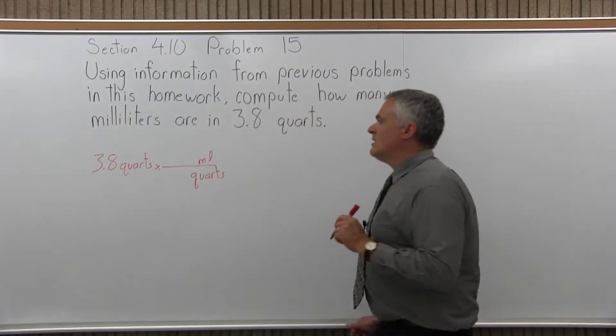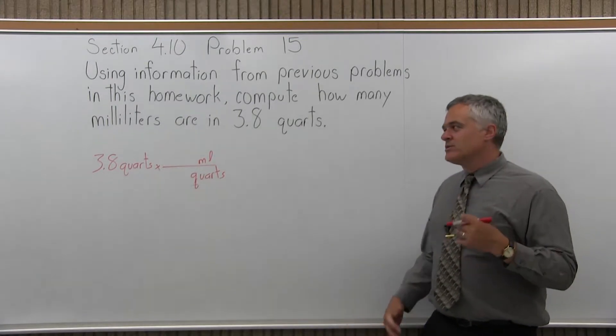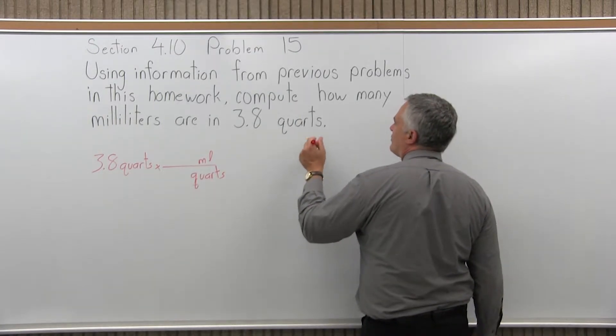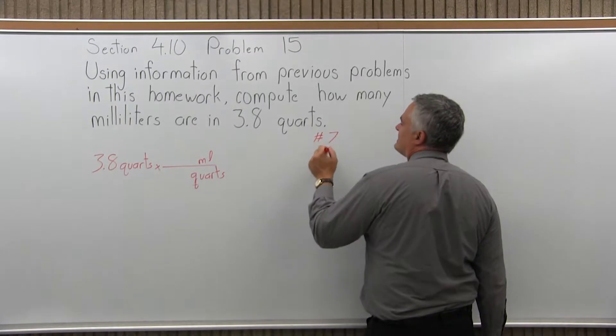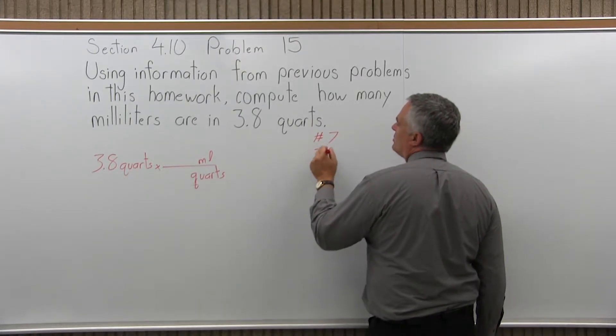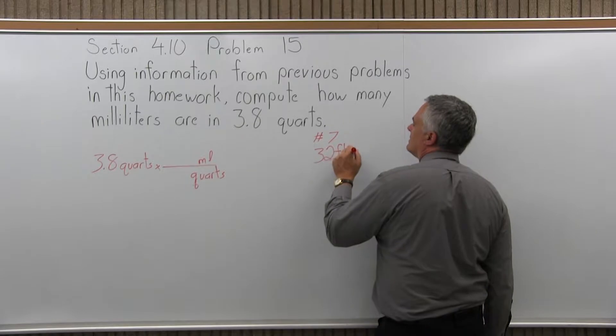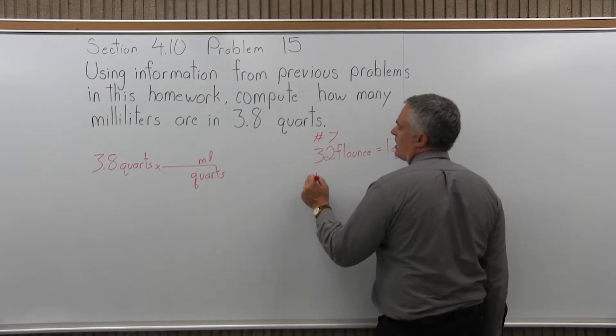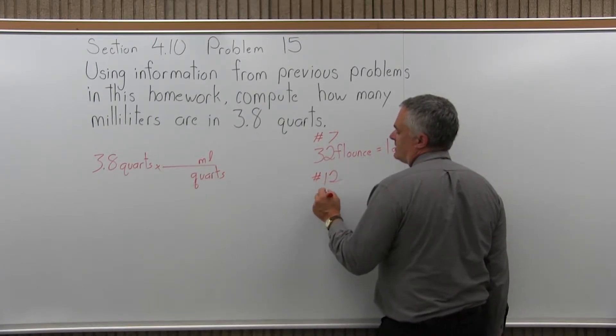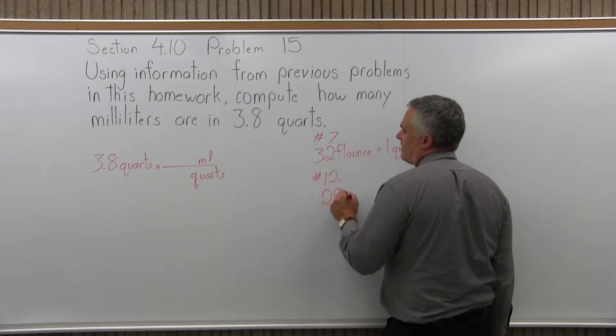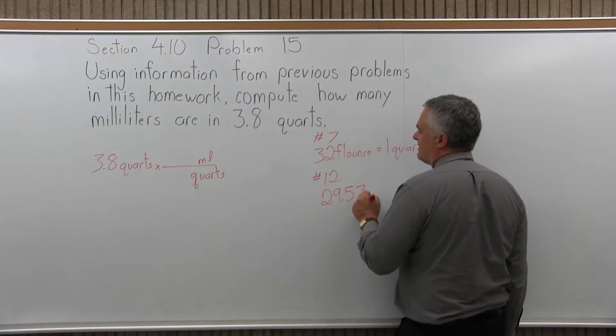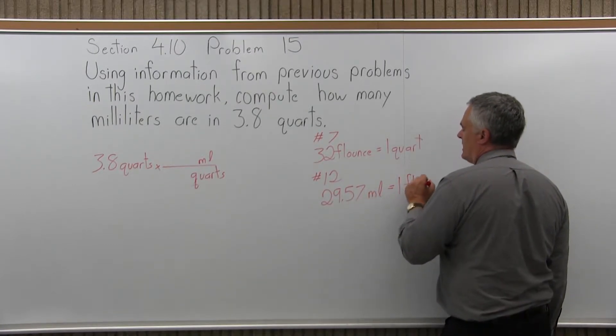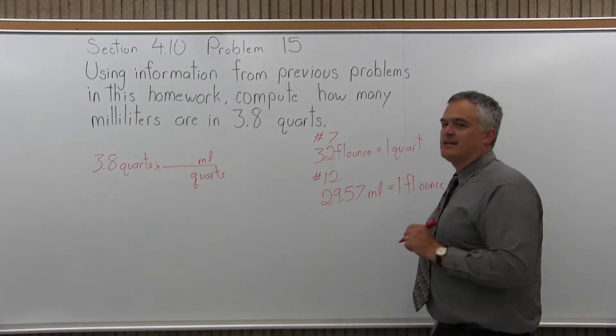Now it says, using information from previous problems. So as you look back in the problems and you're looking for things with milliliters, quarts, and all that, I do find in problem number 7, it says that there are 32 fluid ounces equals 1 quart. And then in problem 12, it tells me that 29.57 milliliters, which I'll abbreviate, is equal to 1 fluid ounce. So that's the given information.